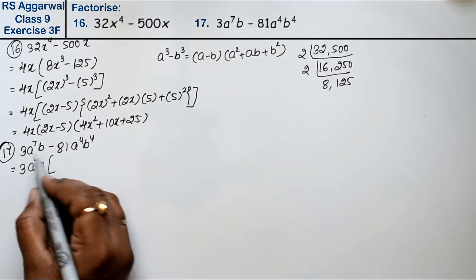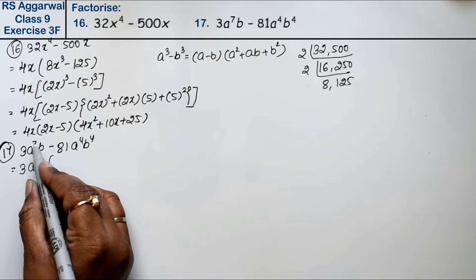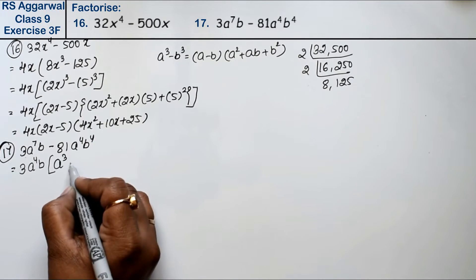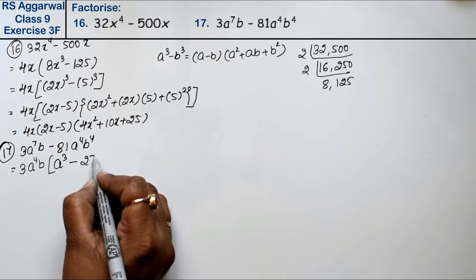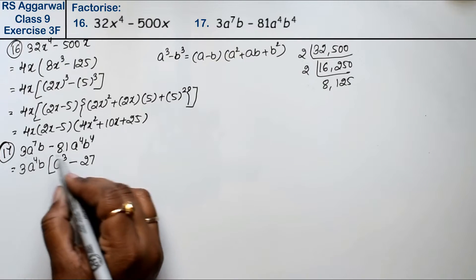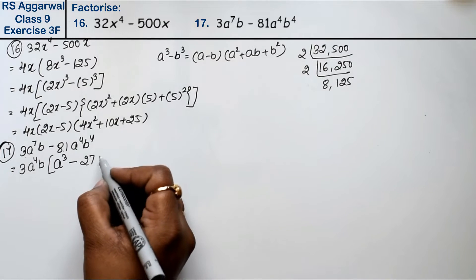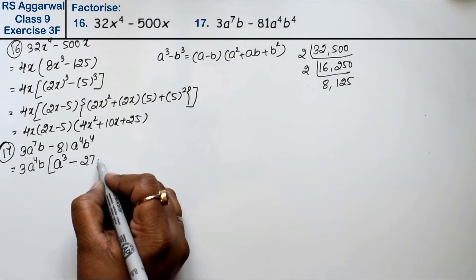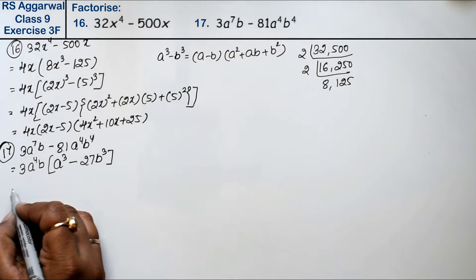What remains inside? Taking out 3, from a^7 we remove a^4 leaving a³. 81 divided by 3 is 27. From a^4, we take a^4. From b^4, we take b leaving b³.